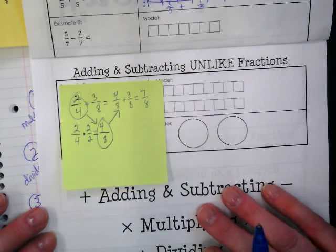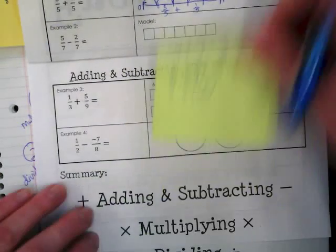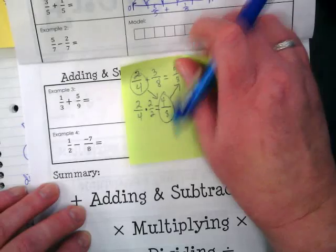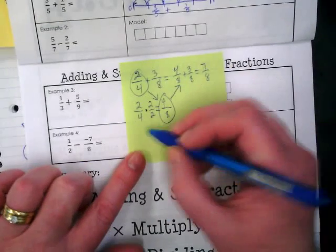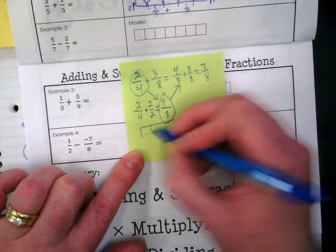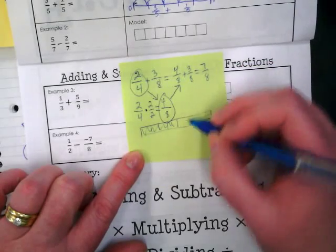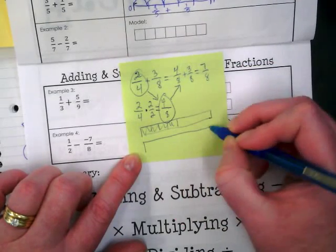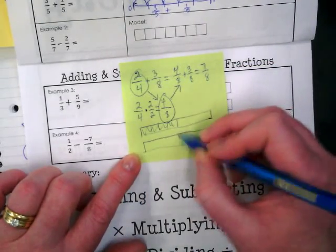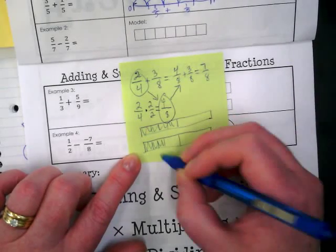And can you show that on your number line and using your model? I would end up with four eighths shaded and three eighths shaded. And what do those two look like together? I would have a total of seven eighths.